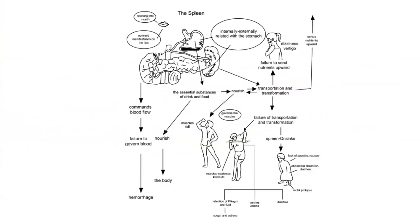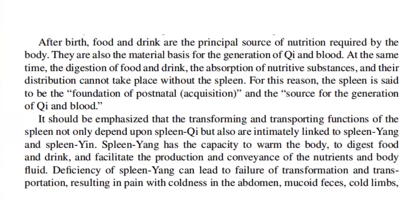After birth, food and drink are the principal source of nutrition required by the body. They are also the material basis for the generation of qi and blood. At the same time, digestion of food and drink, absorption of nutritive substances, and their distribution cannot take place without the spleen. For this reason, the spleen is said to be the foundation of postnatal acquisition and the source for the generation of qi and blood. It should be emphasized that the transforming and transporting functions of the spleen not only depend upon spleen qi, but are also intimately linked to spleen yang and spleen yin.